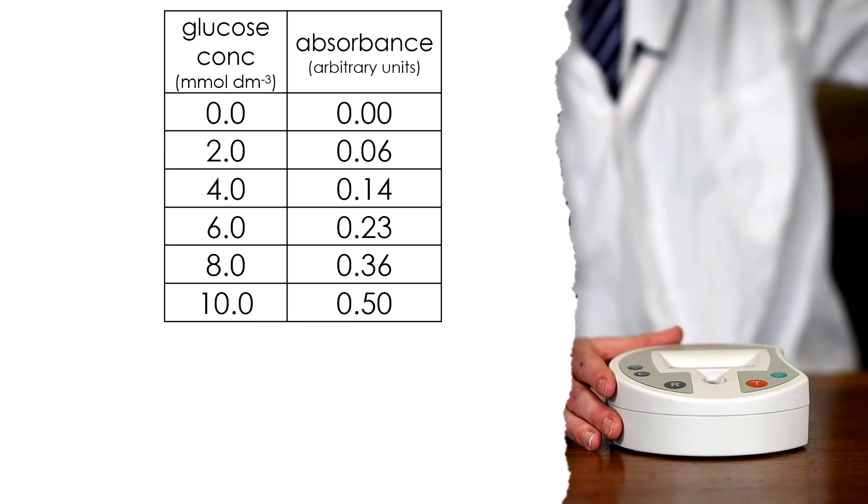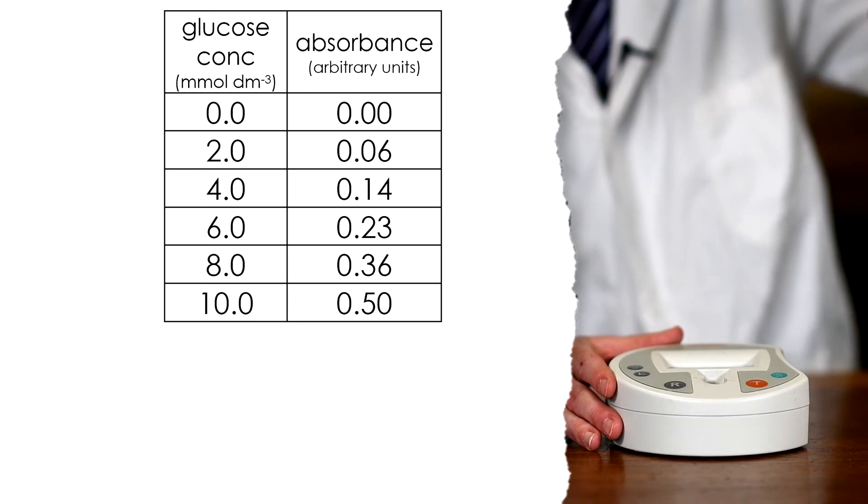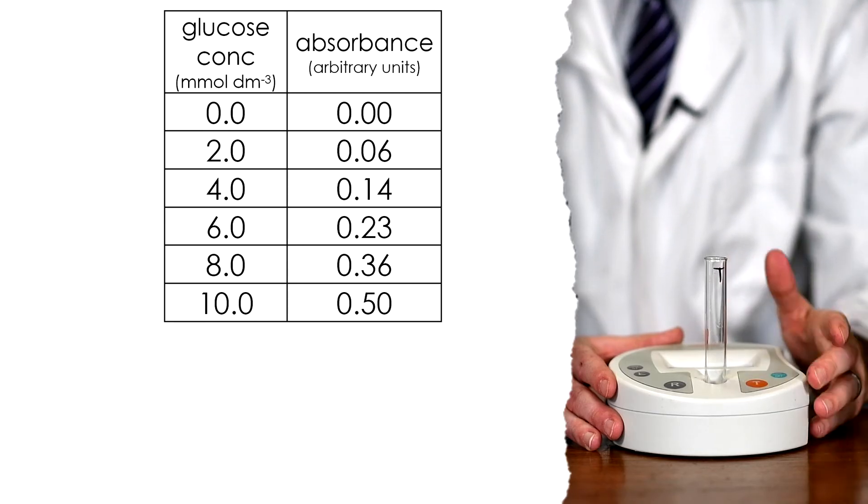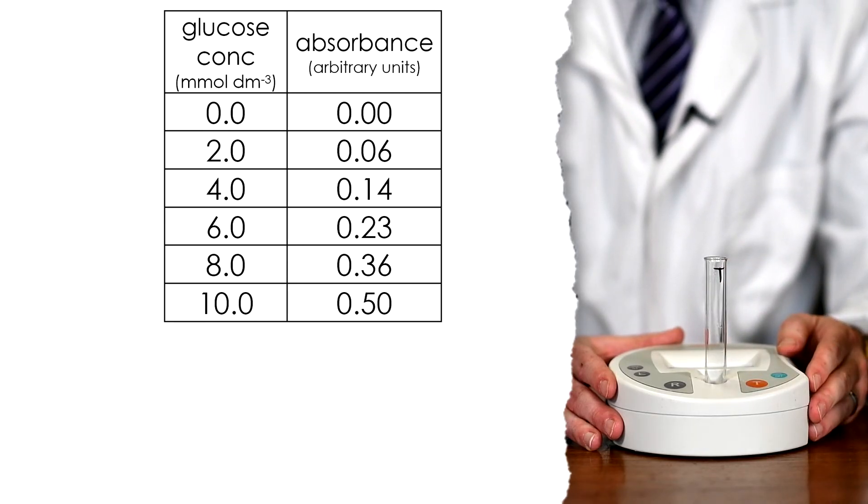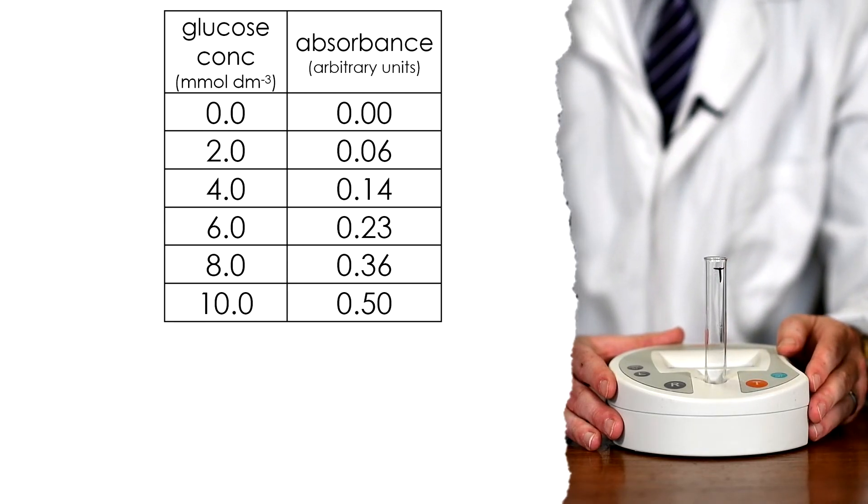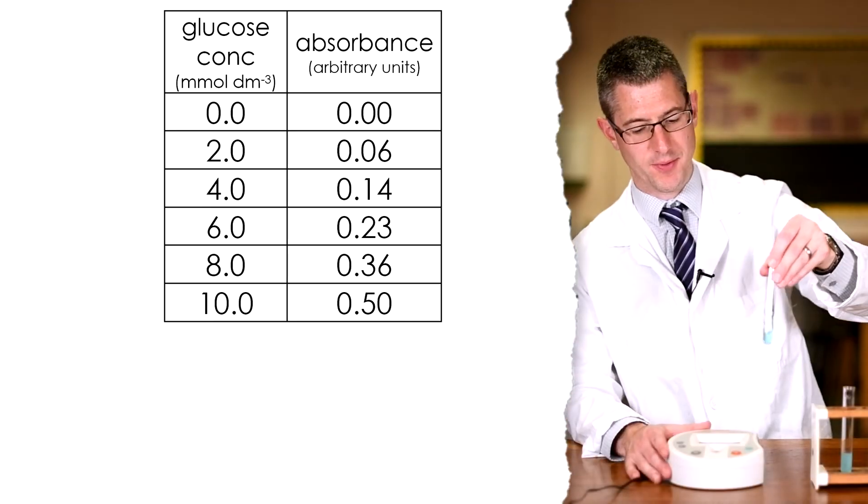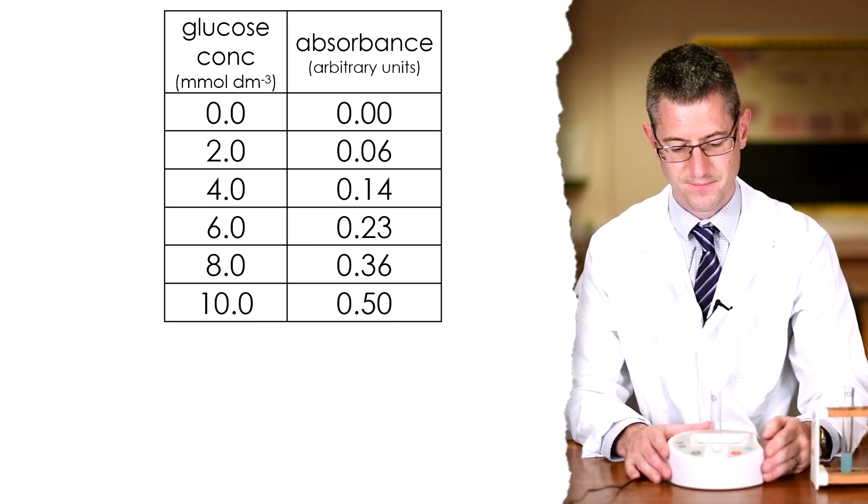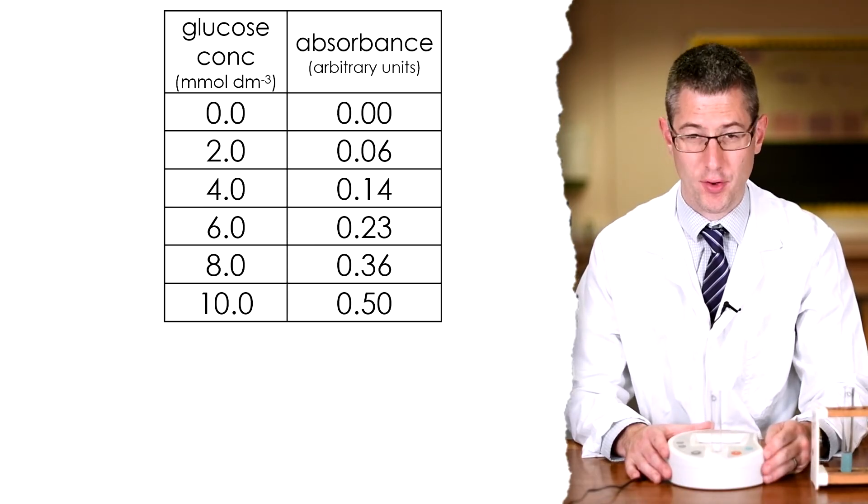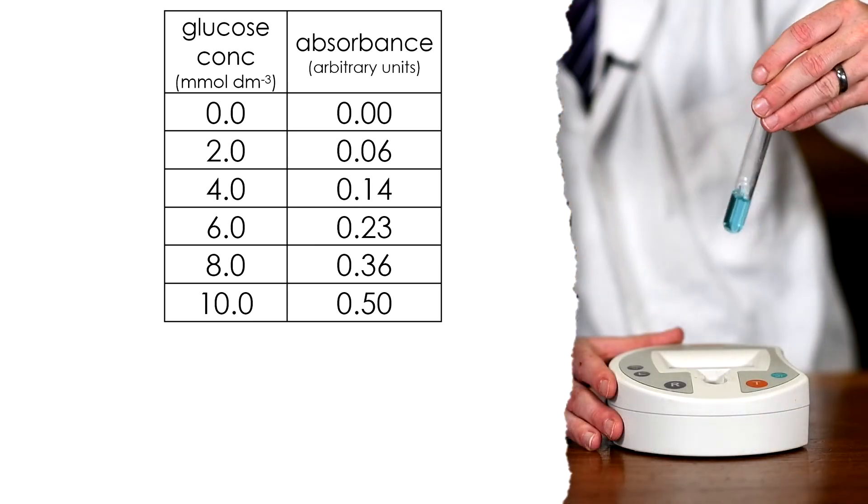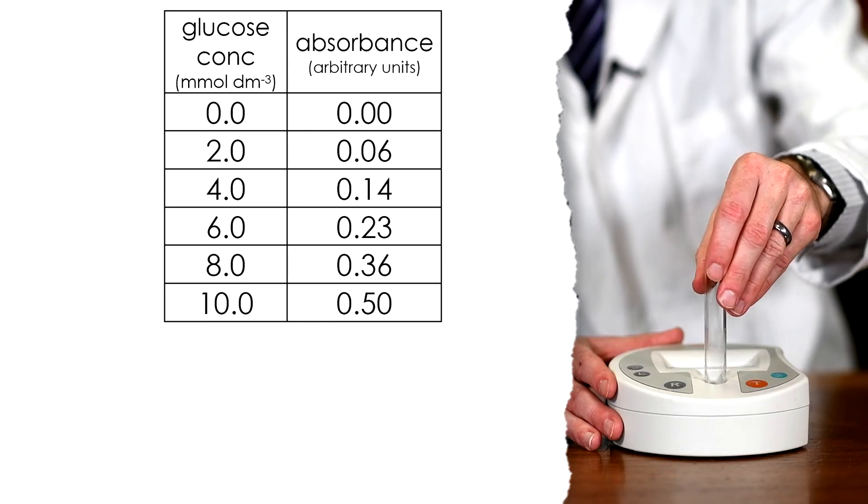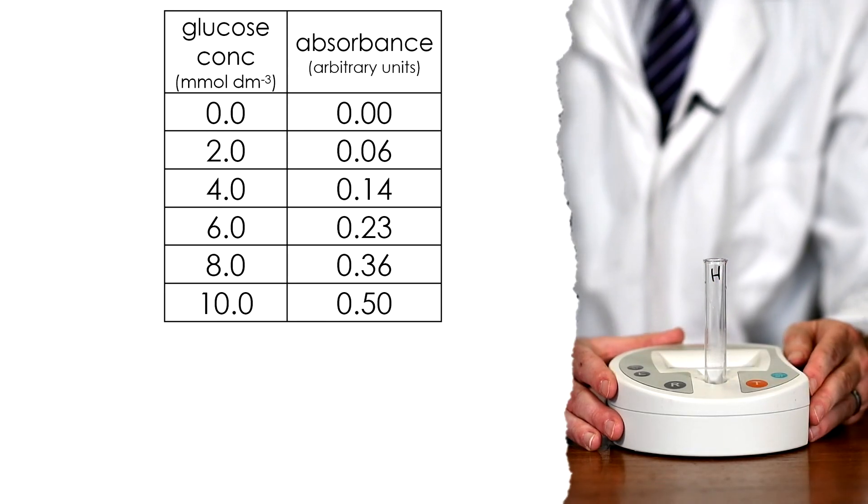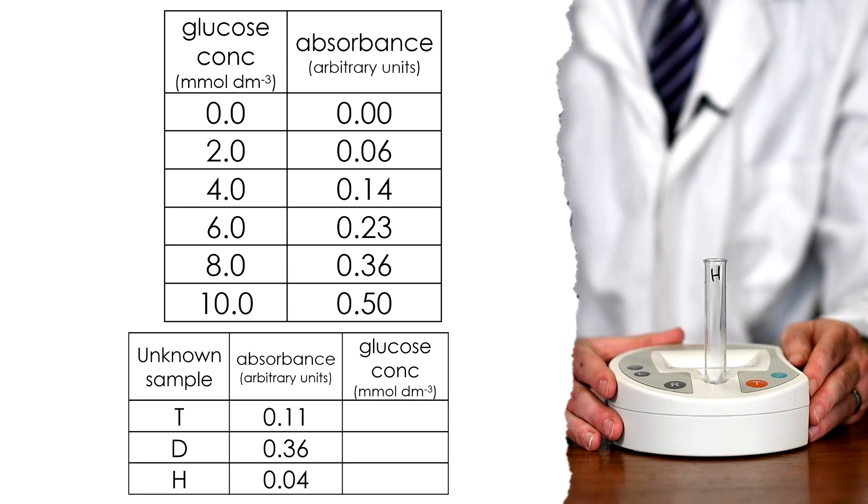I'll measure the sample from Tom. Give it a good shake before we put it in. And the result is 0.11 absorbance. Measure the next sample from Dick, an absorbance reading of 0.36. And finally the urine sample from Harry, a reading of 0.04. So having gained those readings, we'll have to plot a graph of our known glucose concentrations and their absorbance readings.